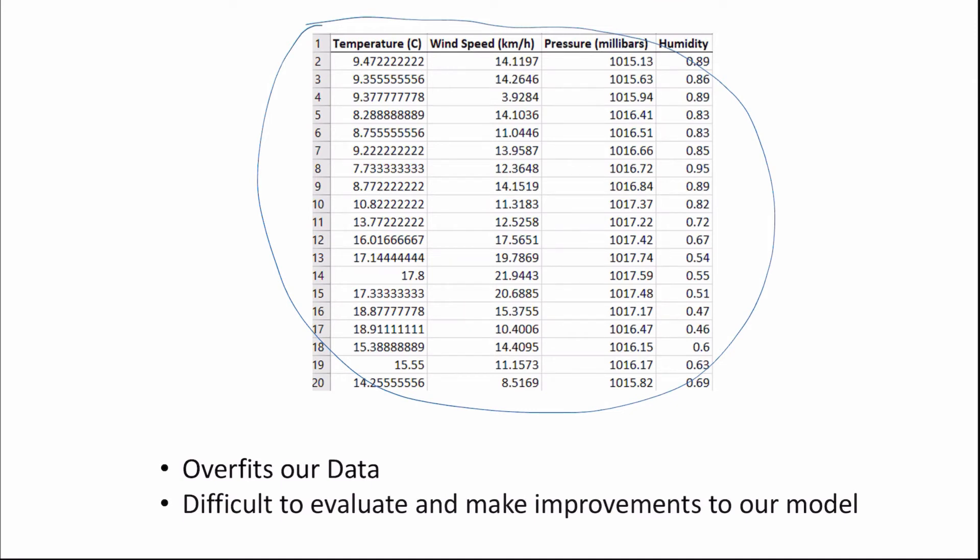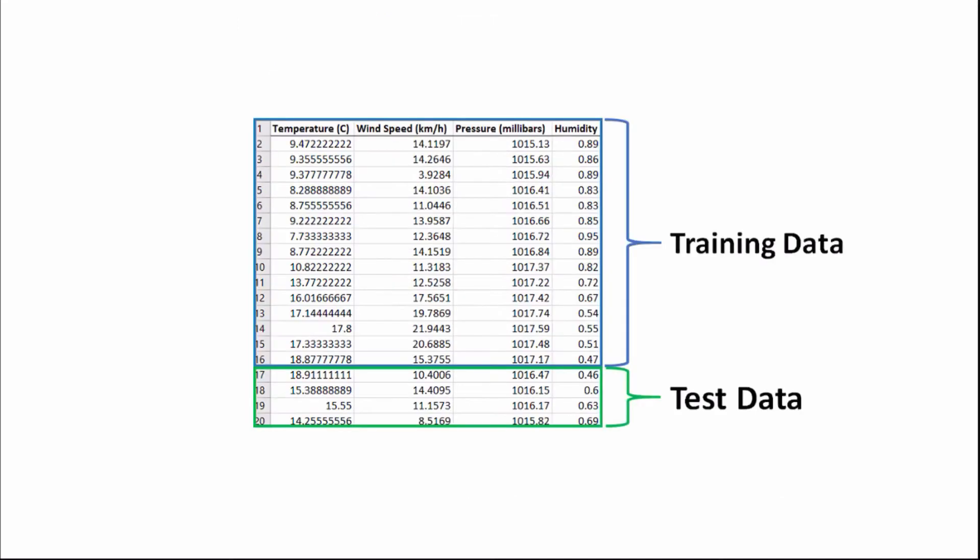So to ensure this doesn't happen, we split our data into two sections: training data and test data.